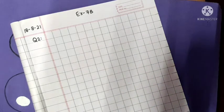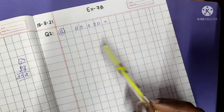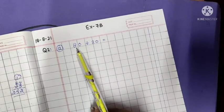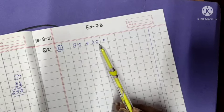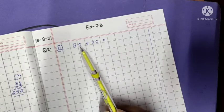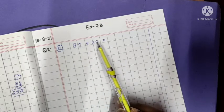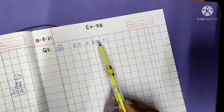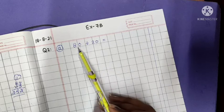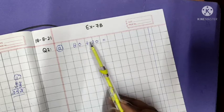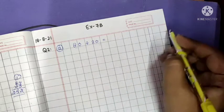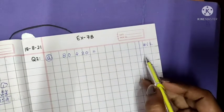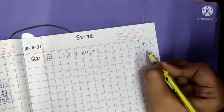First part. Now first of all this question is very simple. You know students, in this, dividend is 80 and divisor is 20. Both the numbers are ending in zeros. So what we can do here? First of all we will remove 10 from here and 10 from here. So what will the number become? Number will become 8 divided by 2. This question is very simple. 8 divided by 2?